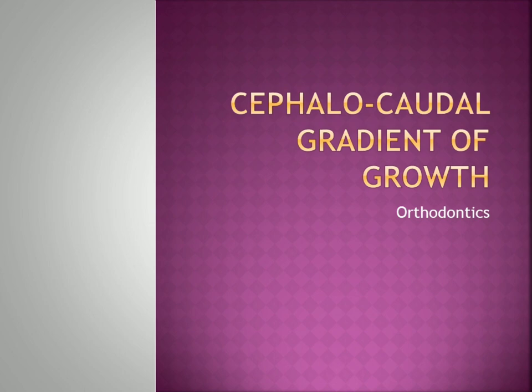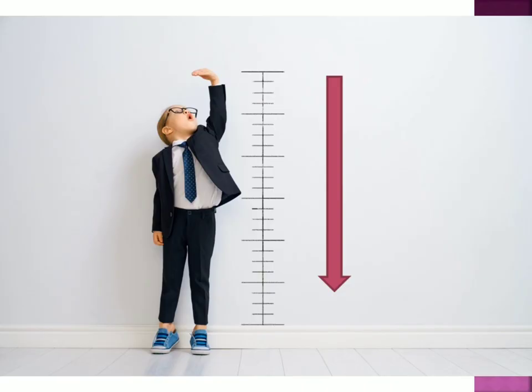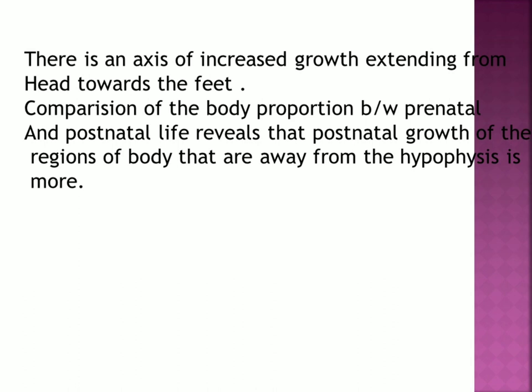Now we are going to deal with the cephalocaudal gradient of growth. The term itself is explanatory — cephalo means head and caudal means tail, so it is a growth gradient from head to tail. There is an axis of increased growth extending from head towards the feet, and this arrow is representing that axis.